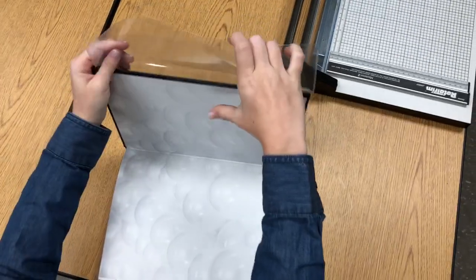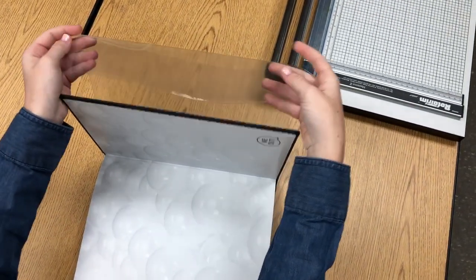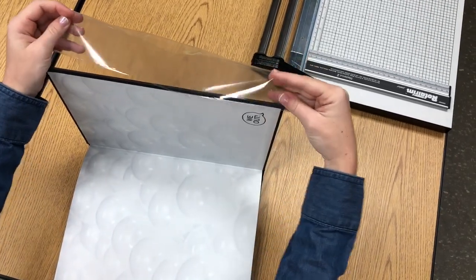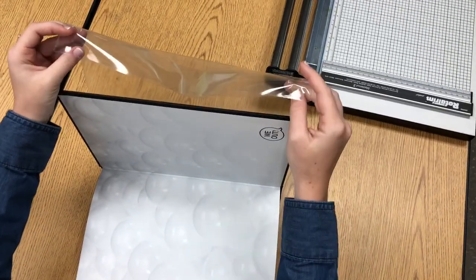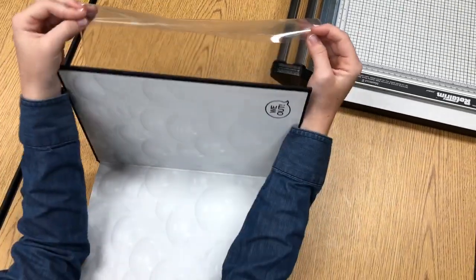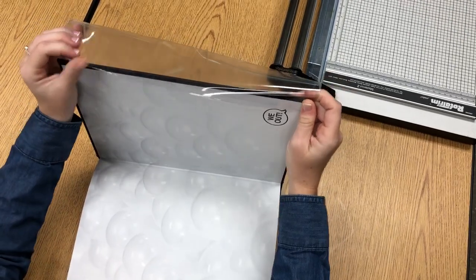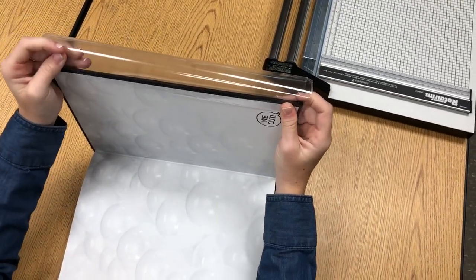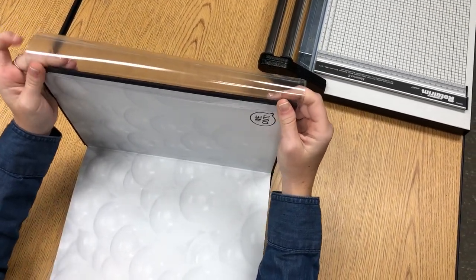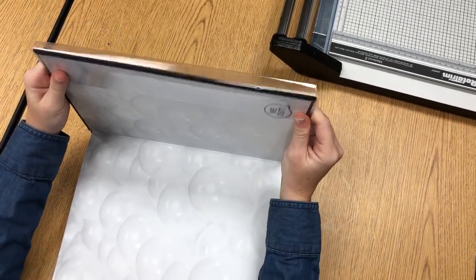What you're gonna do is fold it. There should be a fold already, so just fold it. Let it fold naturally. You're going to stick the open flap around the cover like this. And again you're gonna let it slide on evenly.